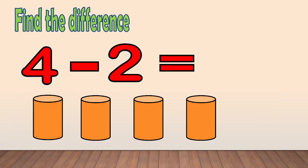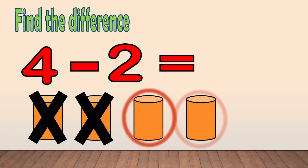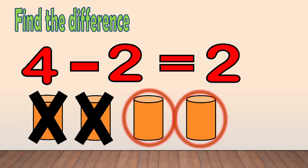Let's answer this: 4 minus 2. Here, we have 4 cans. And then, we are going to take away 2 cans. When we take away, we cross the cans: 1, 2. Now, let's count how many are left: 1, 2. So, 4 minus 2 equals 2.